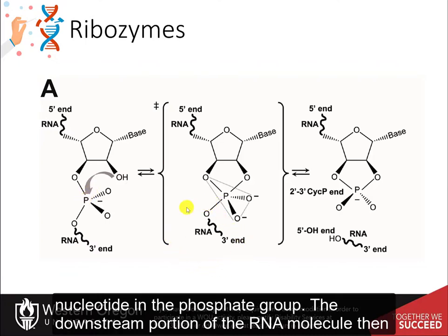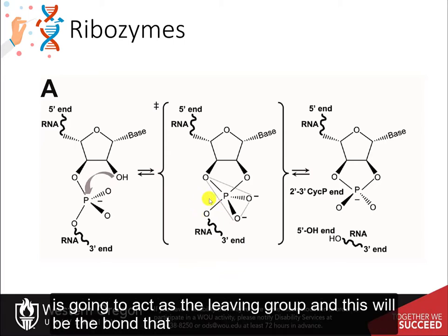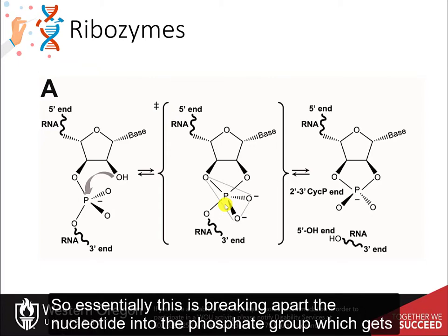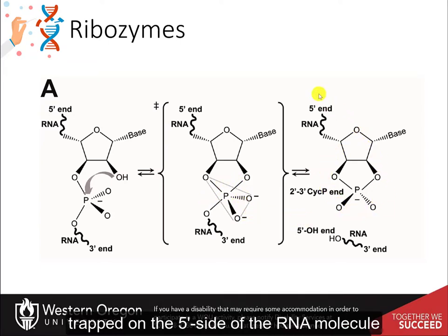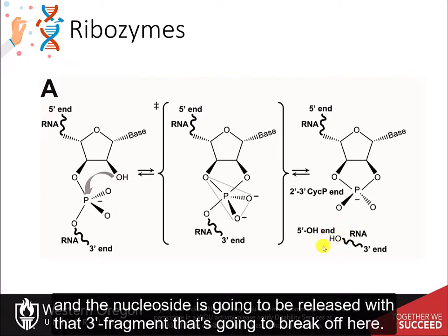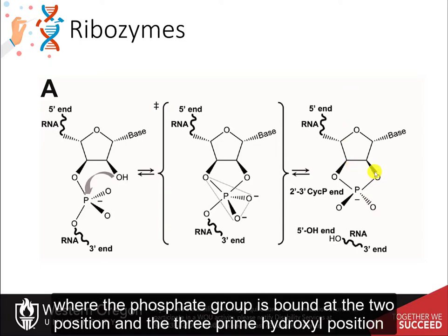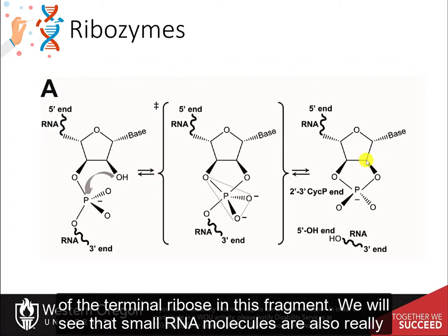The downstream portion of the RNA molecule is going to act as the leaving group, and this will be the bond that ends up being cleaved as the electrons flow back into the phosphate group. This breaks apart the nucleotide — the phosphate group gets trapped on the 5' side of the RNA molecule, and the nucleoside is released with the 3' fragment. This results in a cyclic cleavage product on the 5' side, where the phosphate group is bound at the 2' position and the 3' hydroxyl position of the terminal ribose.